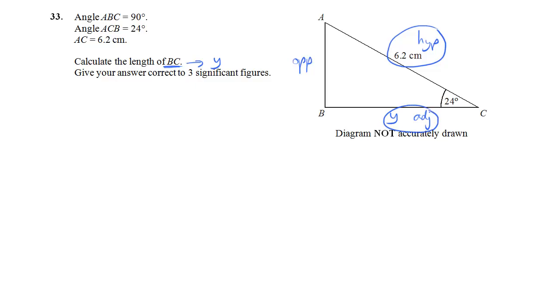So which trig ratio involves adjacent and hypotenuse? That's cosine. And the definition is cos theta is adjacent divided by hypotenuse. So put in the values that we've got. Theta is 24 degrees. The adjacent side is Y, that's what I'm looking for. And the hypotenuse is 6.2.